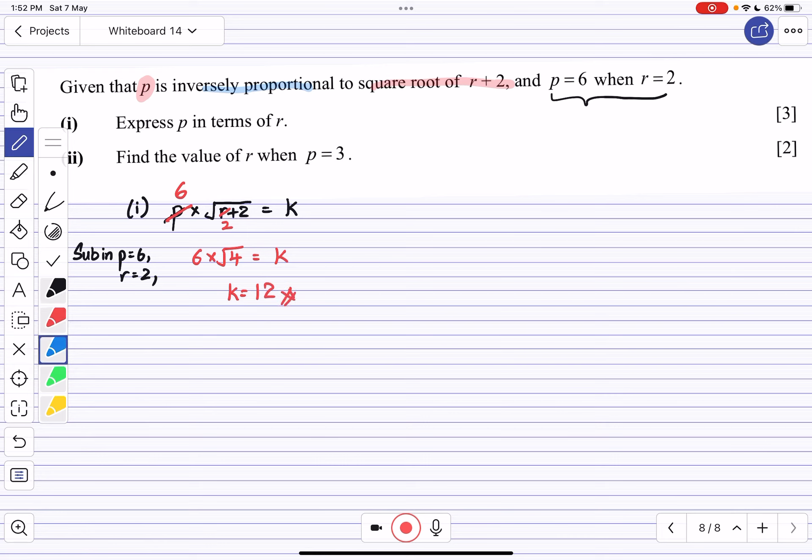The equation can now be written as p times square root of r+2 equals 12.